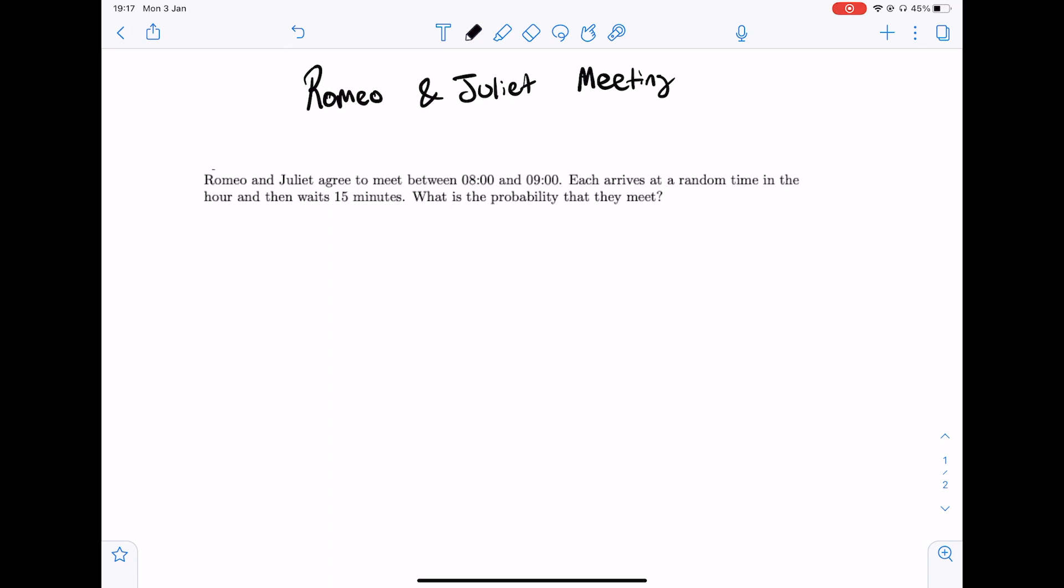Okay so let's think about this. If Romeo arrives at let's say 8:50, clearly it's going to be past 9. So this is not going to count.